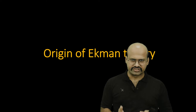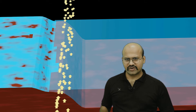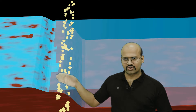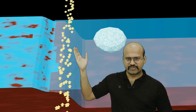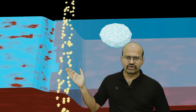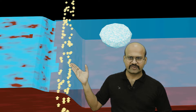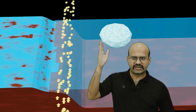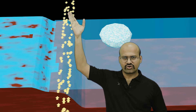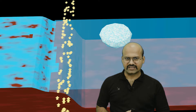The Ekman theory originated when Ekman was in Greenland and observed that when wind blew parallel to the coastline, icebergs did not move along with the wind but instead moved 30 to 40 degrees away from the wind direction and away from the coastline. Ekman was quick to realize that Coriolis force must be playing a part in this.